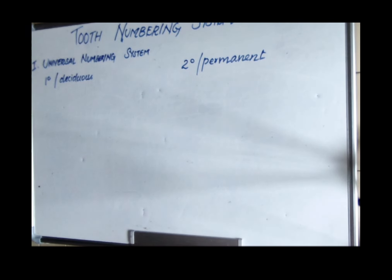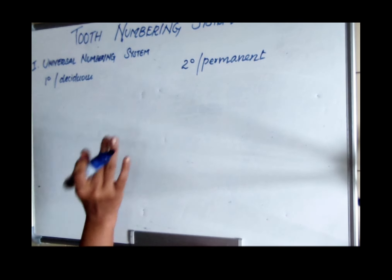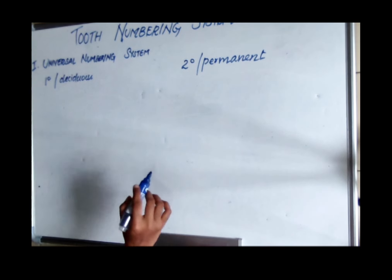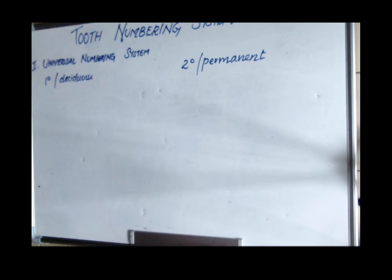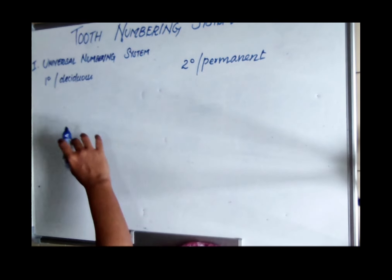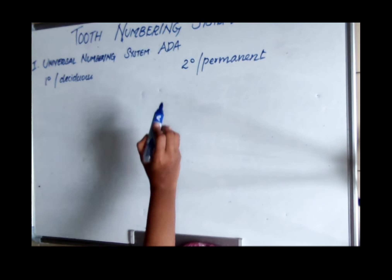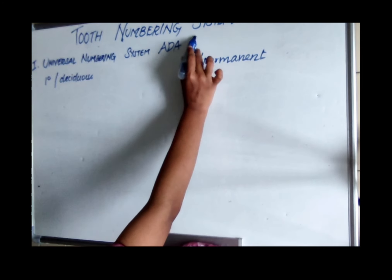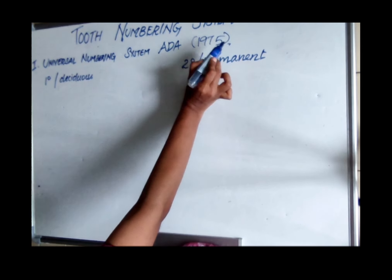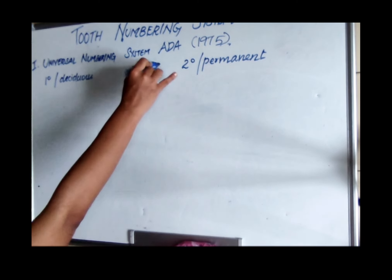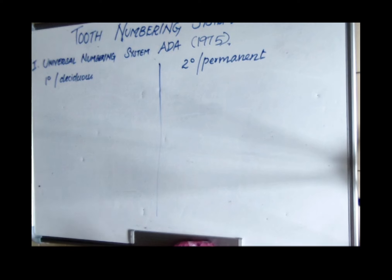Now we will look at the tooth numbering systems. We have three systems: the Universal Numbering System, followed by the Palmer/Sigmondi notation, and then the FDI (Federation Dental International) system. The Universal Numbering System was given by the ADA — American Dental Association — in 1975.